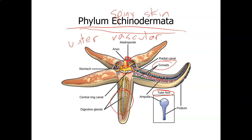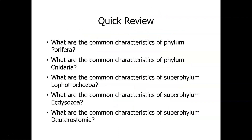The mouth is on the underside and the anus is on top. The stomach is ejected out of the mouth, it surrounds the prey and digests it, and then the stomach is pulled back into the sea star's body.